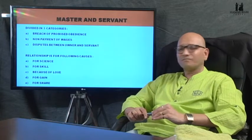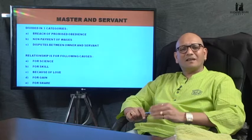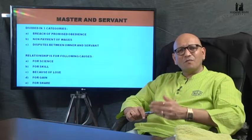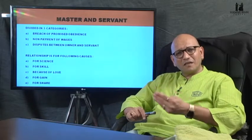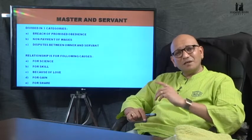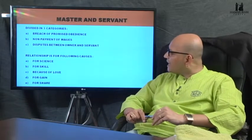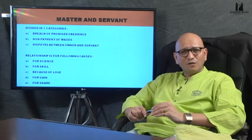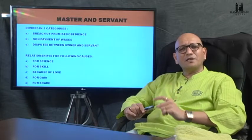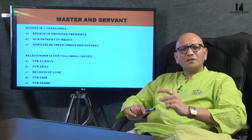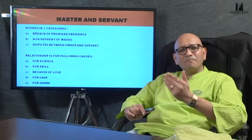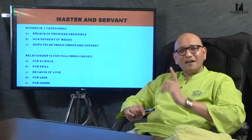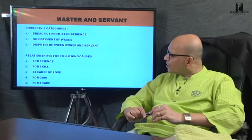The third is because of love. Certain relationships exist because of love, but at the same time they are also governed by the concept of master and servant, hence they are mentioned here. Then there is for gain — a relationship where two persons come together, decide a particular activity, and out of that activity they derive a benefit. That kind of relationship, for gain, is a valid relationship.